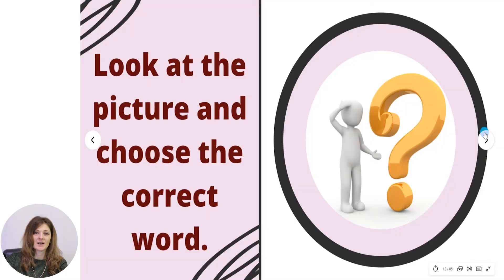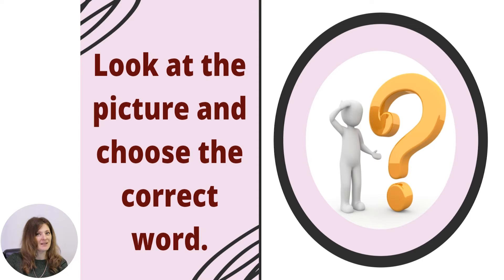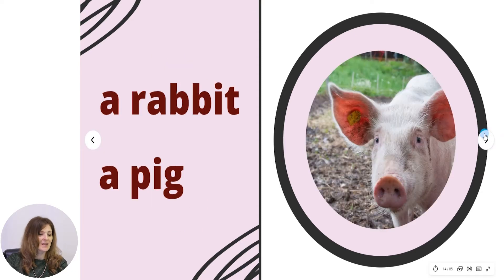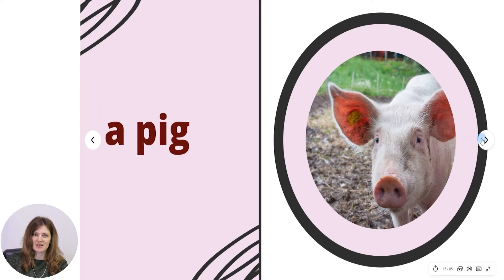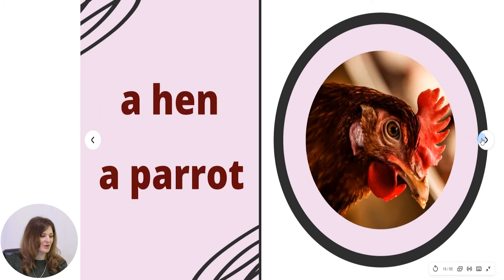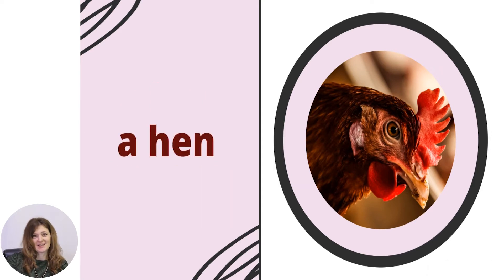Now let us continue with the next activity. This time you have to look at the picture and choose the correct word. Look at the picture — a rabbit or a pig? It's a pig. Let's move on. Is this a hen or a parrot? Definitely it's a hen.